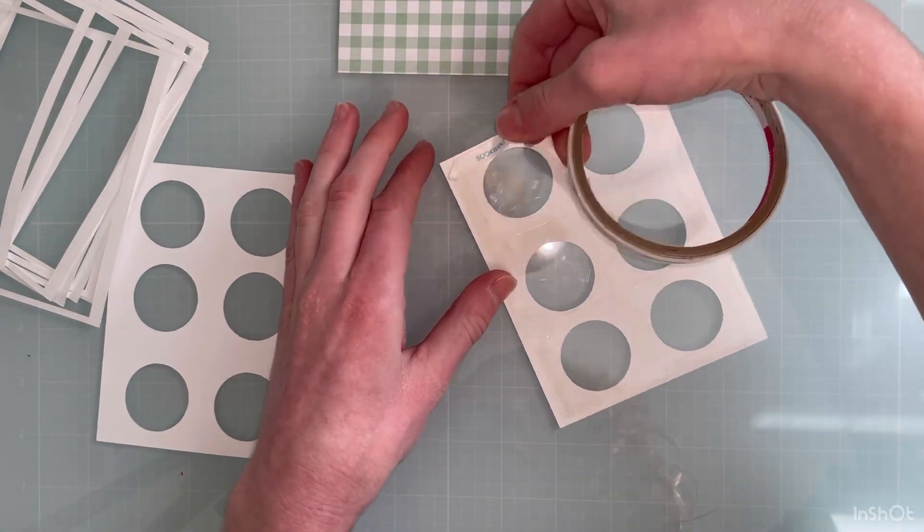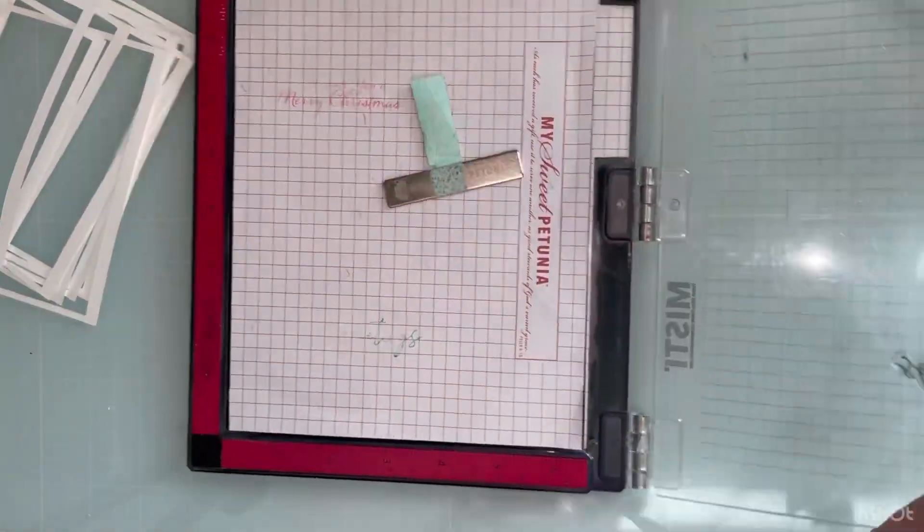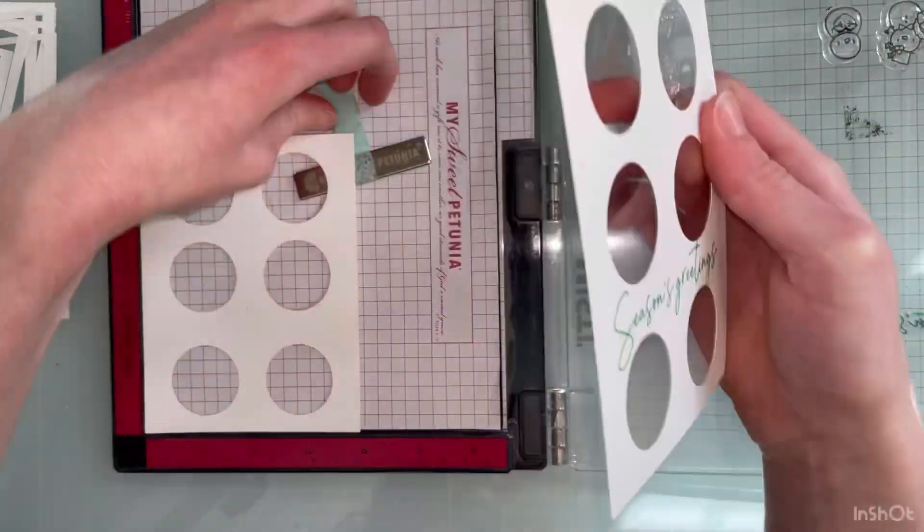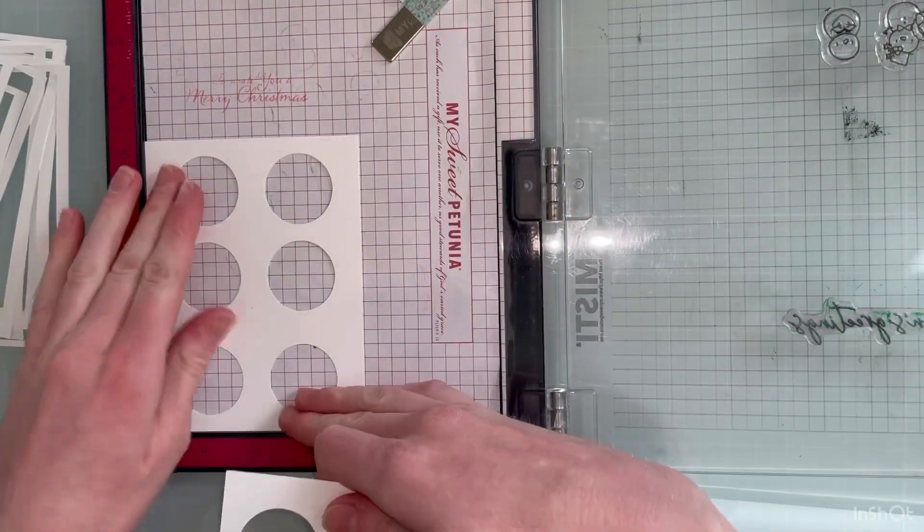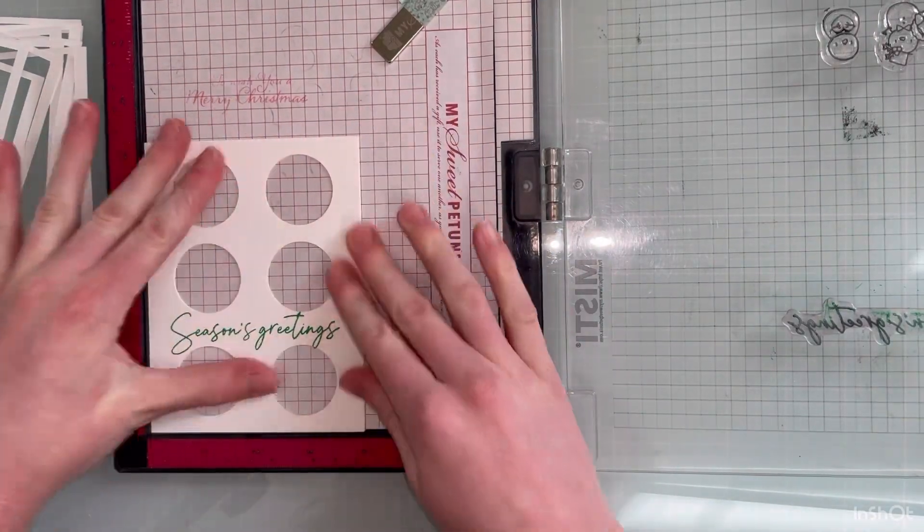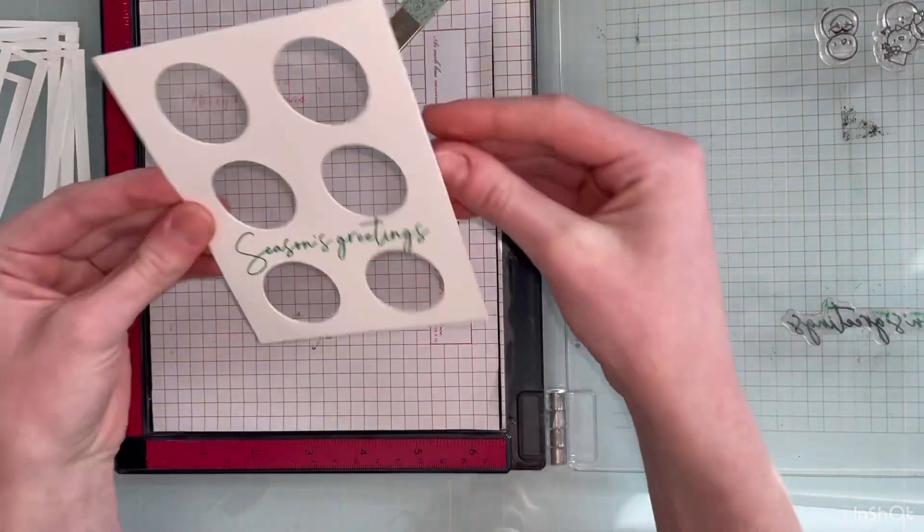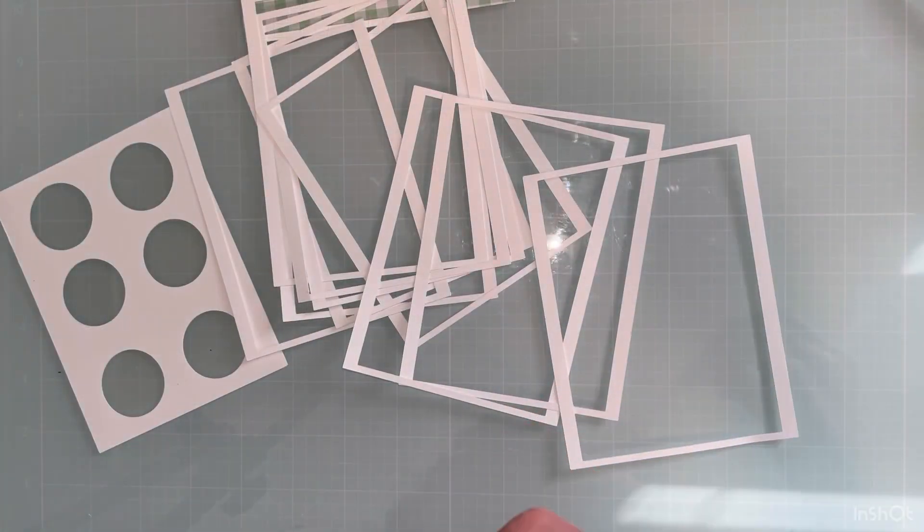But I added some double-sided tape to the back of this and then placed a piece of acetate. And then I decided to layer this piece again. I just put it in my Misty to help me line it up perfectly. And it worked really, really nice. This will just give it a little bit more stability.